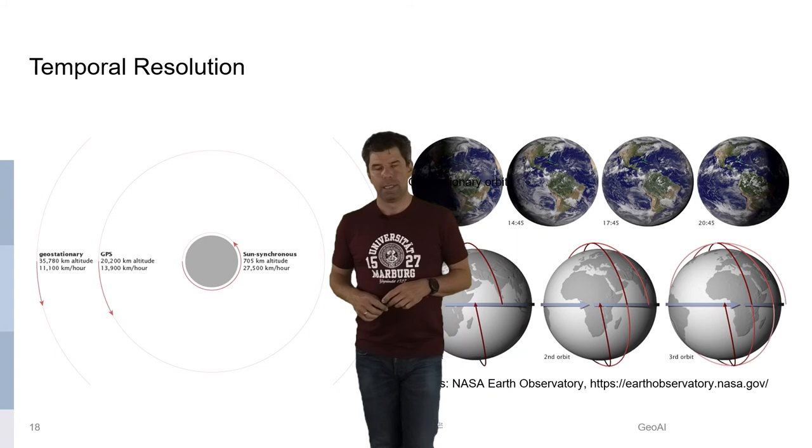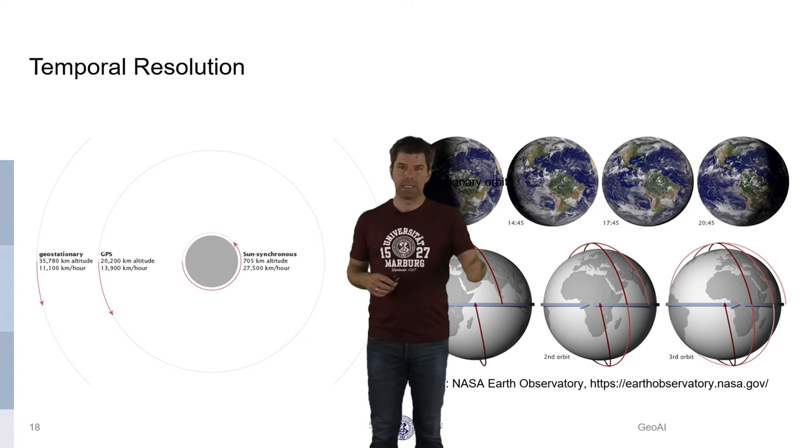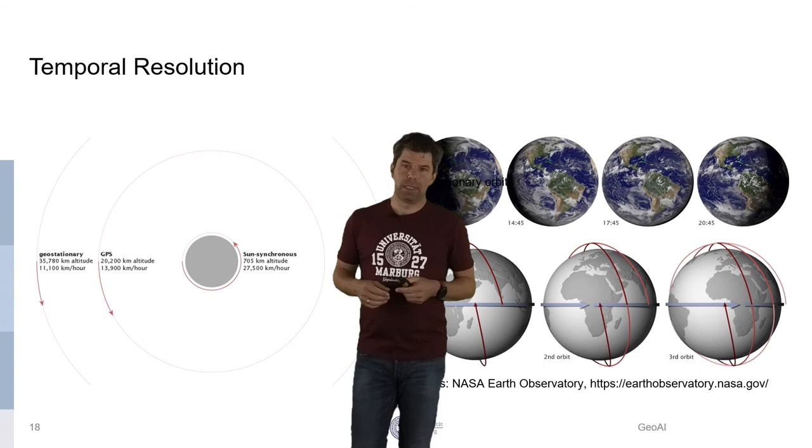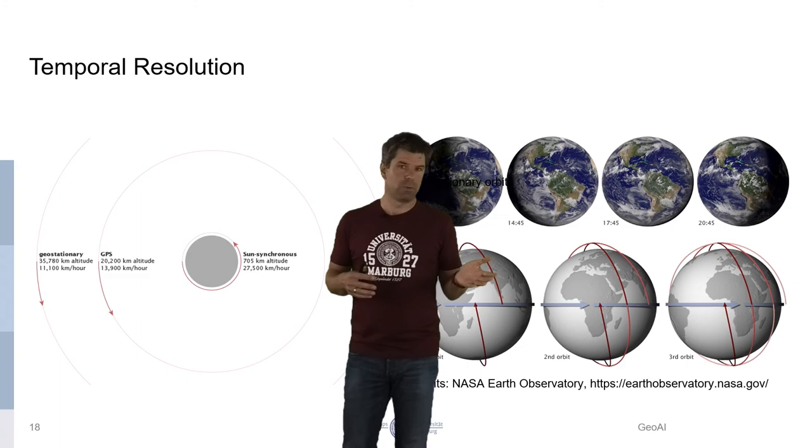And it will take, and that depends on the satellite, between half a day and about a week until you come over the same point again. So the temporal resolution in these low Earth orbits are generally much lower than the temporal resolution in the geostationary orbit. But since you are not so far away from the Earth, you can have a higher spatial resolution, for example, for the same price on that orbit.